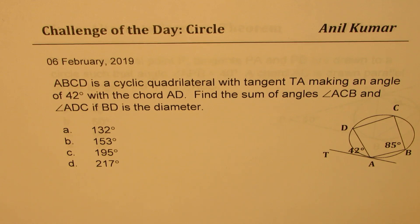ABCD is a cyclic quadrilateral with tangent TA making an angle of 42 degrees with the chord AD. Find the sum of angles ACB and angle ADC if BD is the diameter. Four choices are given to you. We have defined many terms in this question that will review a lot of concepts related to circles, quadrilaterals, and a few theorems.